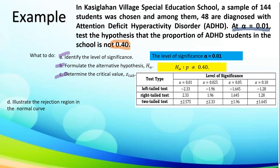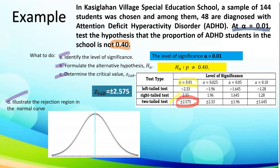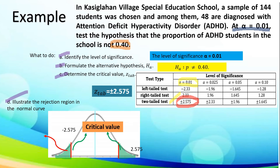To determine the critical value, we utilize the Z-table. Since this is a two-tailed test with alpha of 0.01, it falls under positive/negative 2.575. To illustrate the rejection region in the normal curve, we show the two critical values: negative 2.575 and positive 2.575. These are the critical values, and the shaded regions on both sides are our rejection regions.